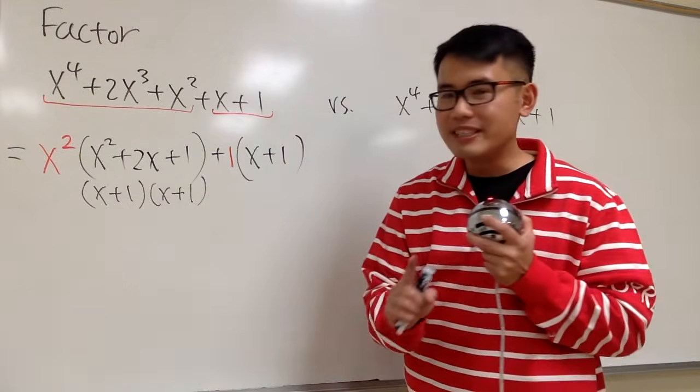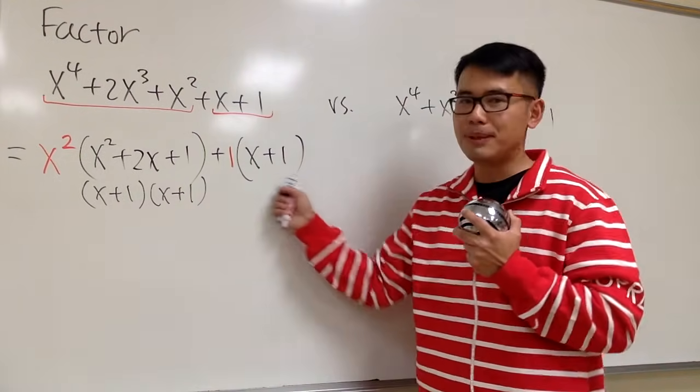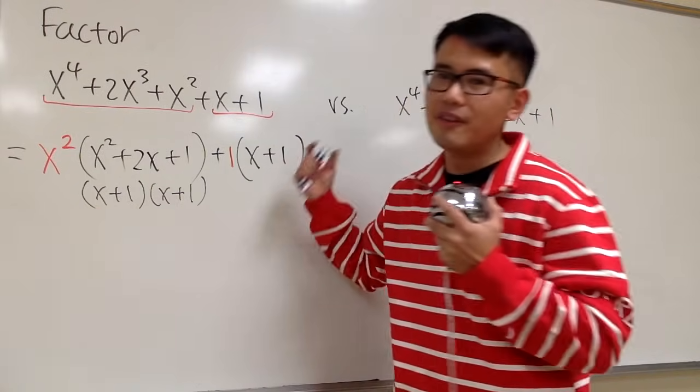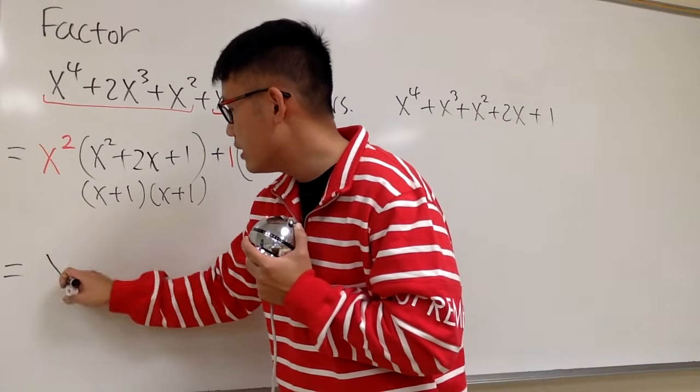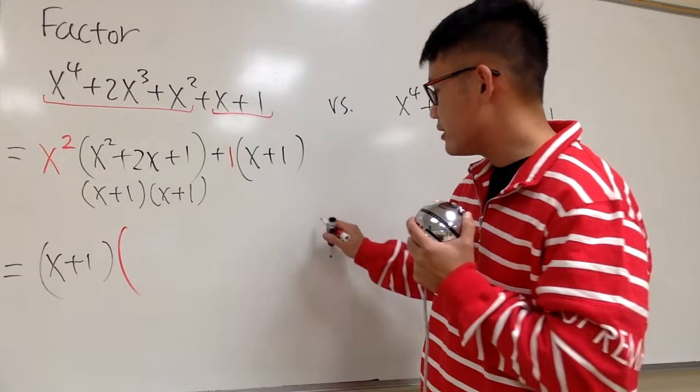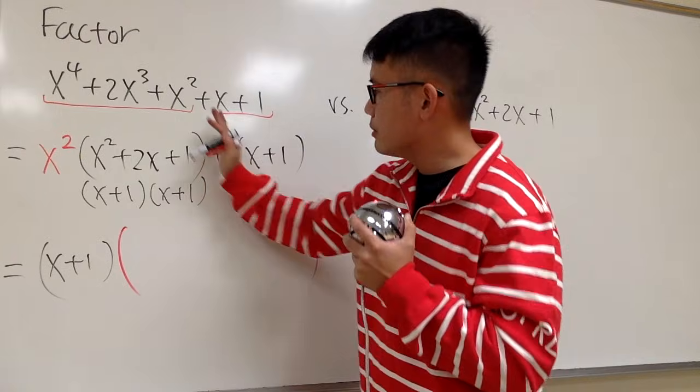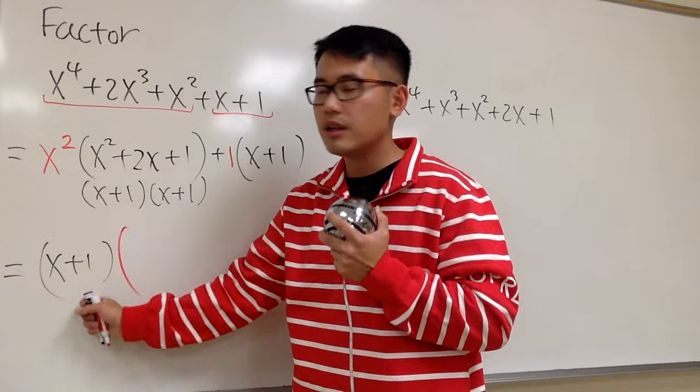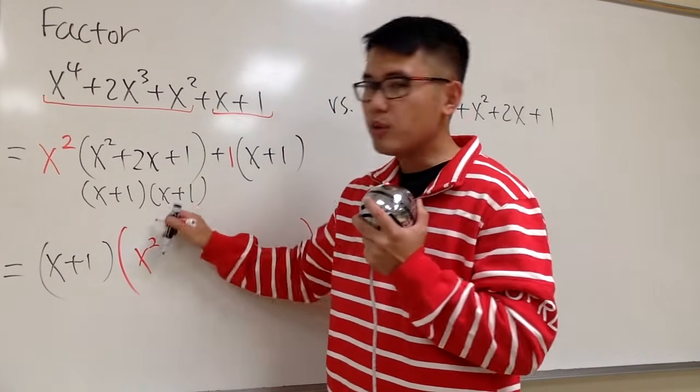And we see that I have an x plus 1 right here, and this is also an x plus 1. Now, that means I can factor out one of these, right? So we will do that. Let me factor out x plus 1, and then let me put down the leftover in this big parenthesis. For the first part here, okay, before this addition sign, we took one of the x plus 1 out. That means we have the x squared right here still left, and then we have another one right here. So let me put that down.